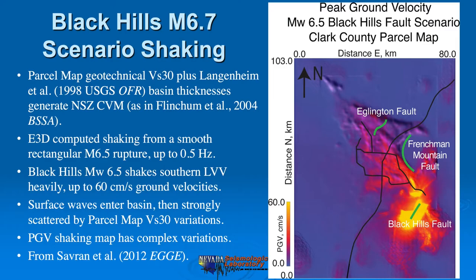What gets really interesting is when we project earthquake shaking in a scenario through this map. We use the same modeling procedure as Brady Flincham did in his 2004 BSSA article about the Little Skull Mountain rupture and its waves propagating into Las Vegas. We project a local earthquake outside of the basin on the Black Hills fault, whose surface waves channel from the southeast into Las Vegas Valley and its basin, forming a rather complex peak ground velocity map.